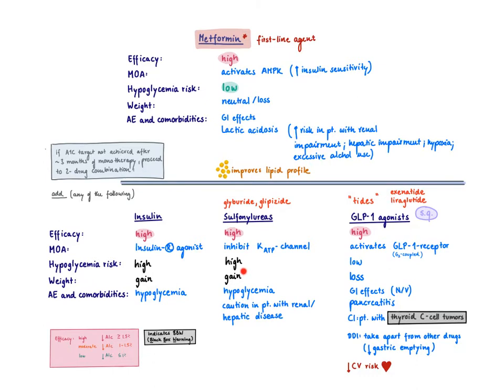Sulfonylureas also lead to weight gain. These two always go together - whenever you kick out extra insulin, it leads to hypoglycemia and weight gain. You always have them coupled when the mechanism is due to extra insulin. We should be careful in patients with renal and hepatic disease because these drugs are metabolized in the liver and excreted by the kidney.